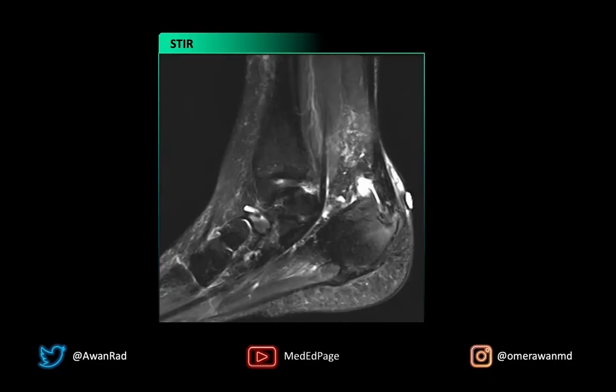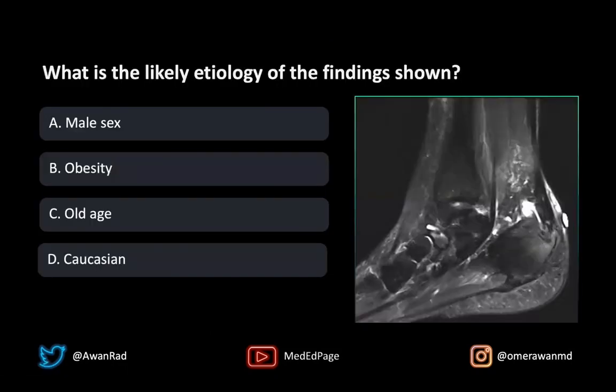Here we have a STIR sagittal image through the ankle. And the high yield question we have is: what is the likely etiology of the finding shown? Is it male sex, obesity, old age, or Caucasian? What's the likely etiology of the finding shown?